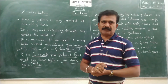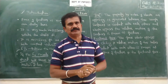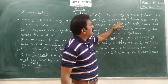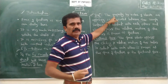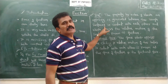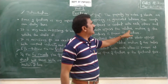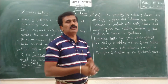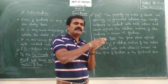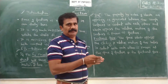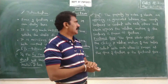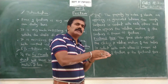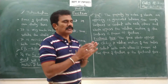Now let us define friction. The property by virtue of which an opposing force is generated between two surfaces in contact with each other, and which opposes the relative motion of the surfaces, is known as friction. One can experience this frictional force when two objects are in contact — at the surface of contact, the property of opposition is exerted. There should be a relative motion: one body may be at rest while the other is moving.